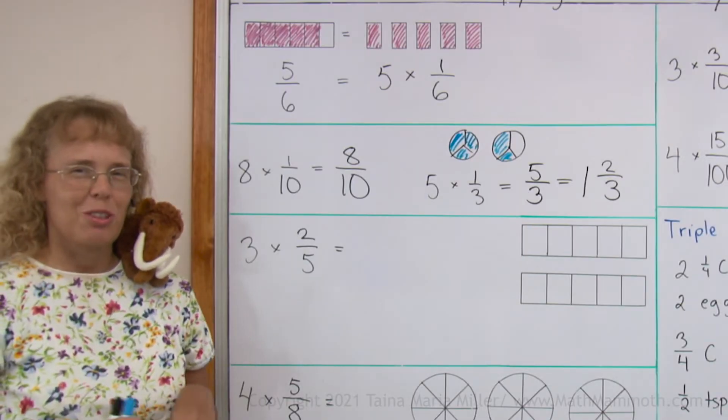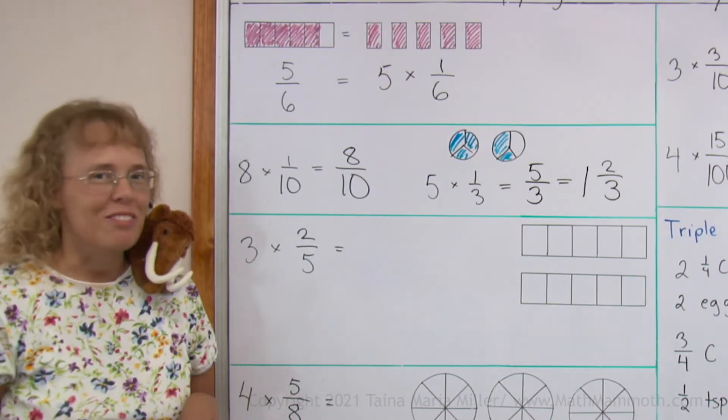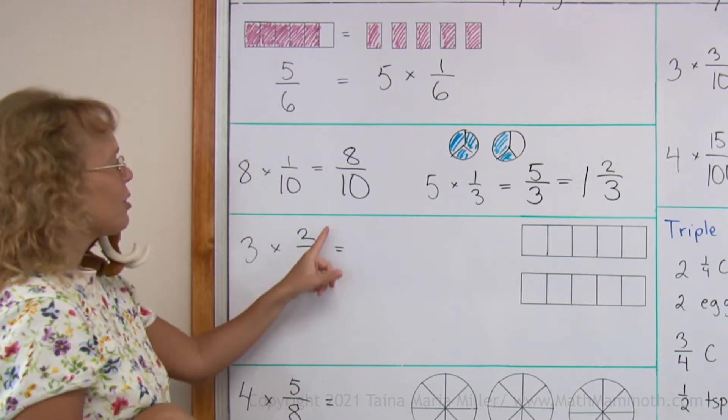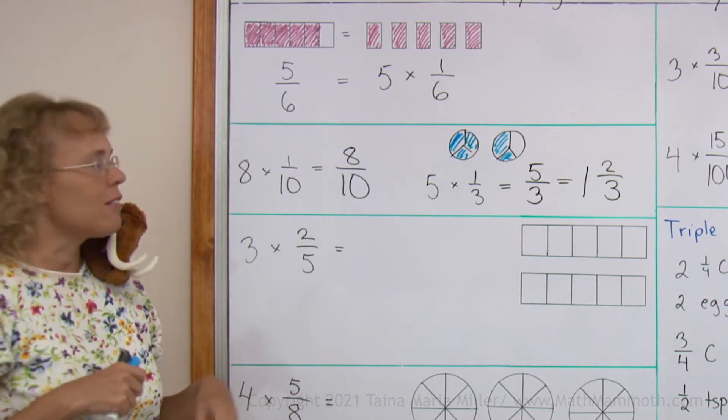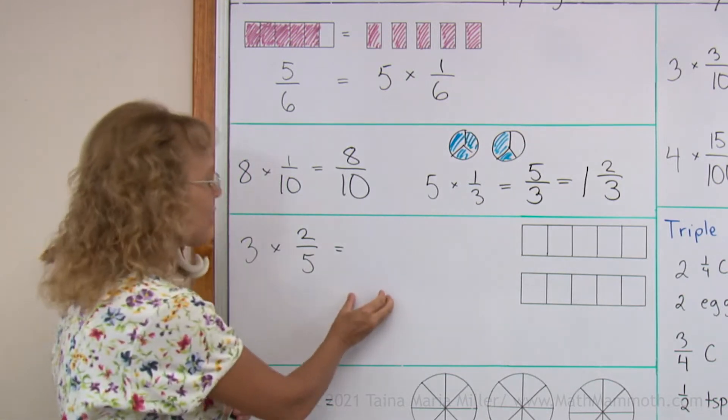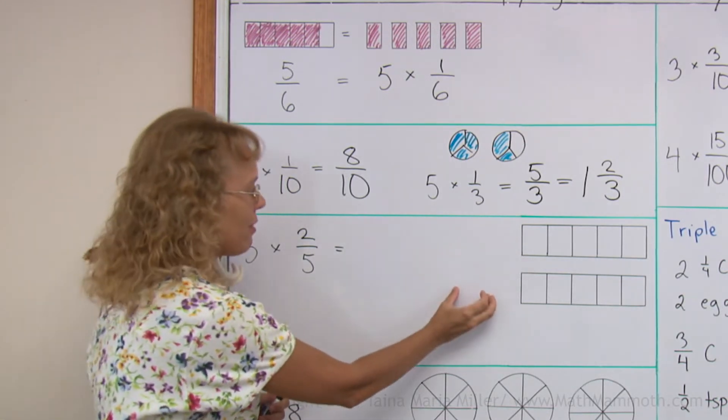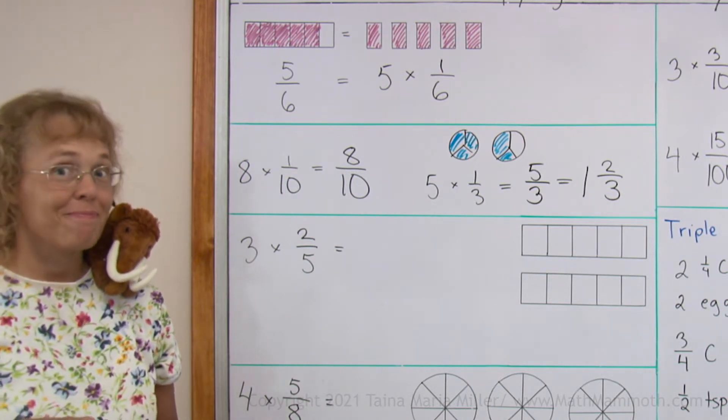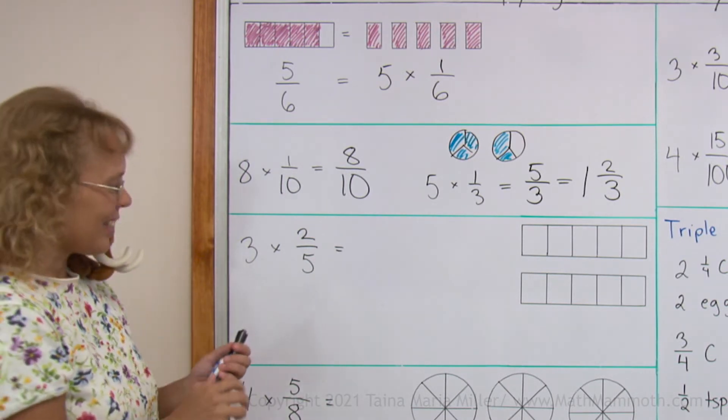Since that was so easy, let's take something a little bit more difficult. 3 times 2 fifths. Again you can think of 3 copies of 2 fifths. 2 fifths and 2 fifths and 2 fifths. How much is that in total? Yeah, you might have a guess.